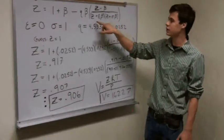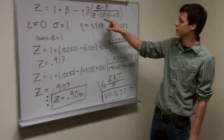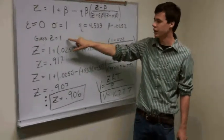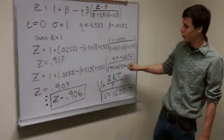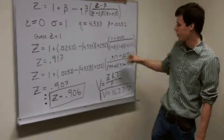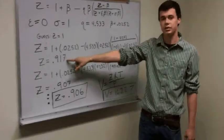Since we cannot explicitly solve for Z in this equation, we have to guess an initial value of Z equals one, because that is the Z value of an ideal gas. We then plug everything into this equation and calculate a Z initial value of 0.917.